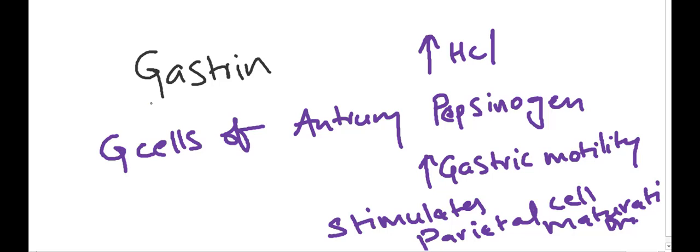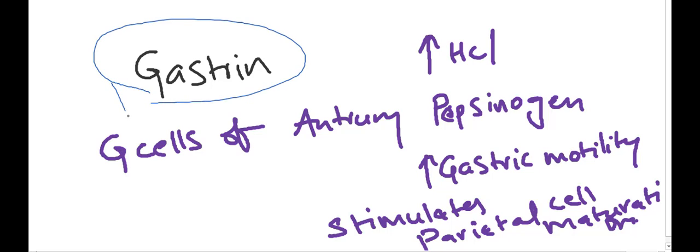Coming to gastrin — gastrin is secreted from the G-cells of the antrum of the stomach.